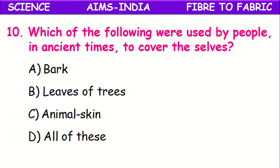Which of the following were used by people in ancient times to cover themselves? Barks and leaves of trees and animal skin — all of these were used by people in ancient times to cover themselves and protect from atmospheric conditions. So all of these is the correct answer.